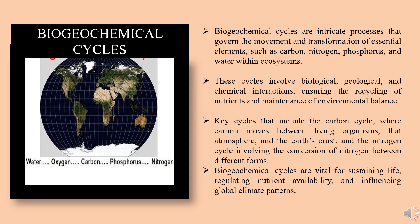The key cycles include the carbon cycle, where carbon moves between living organisms, the atmosphere, and the earth's crust, and the nitrogen cycle, involving the conversion of nitrogen between different forms. These cycles are vital for sustaining life, regulating nutrient availability, and influencing global climate patterns.